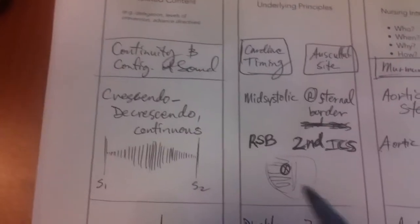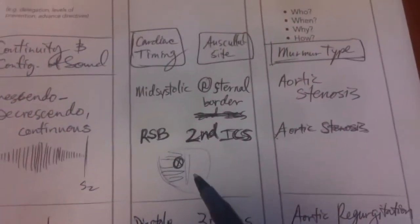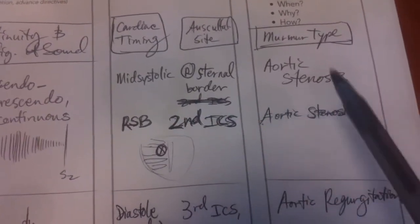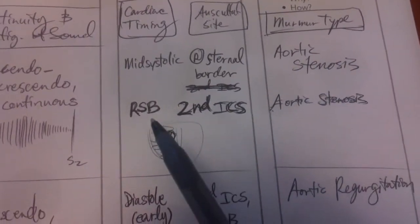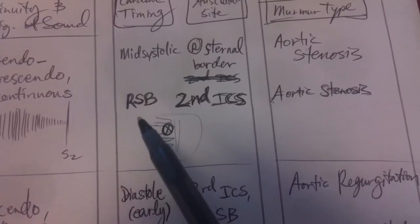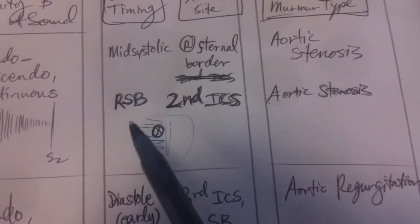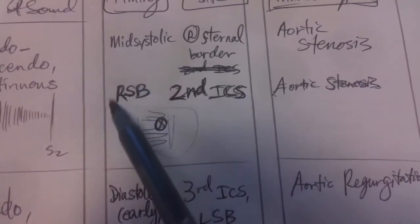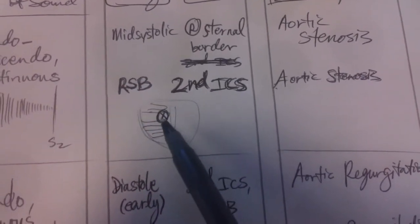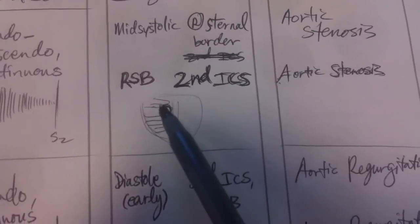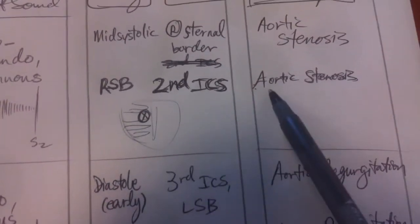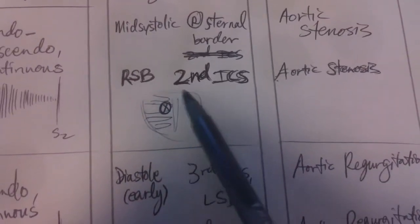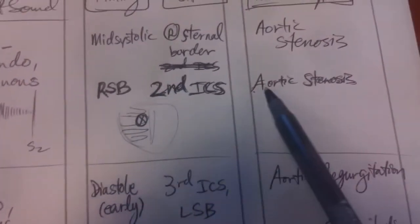Now this one is crescendo-decrescendo, mid-systolic timing — that's aortic stenosis. The mnemonic is 'run second base' from baseball. So right sternal border, second intercostal space, aortic stenosis. Run second base: second intercostal space, aortic stenosis.